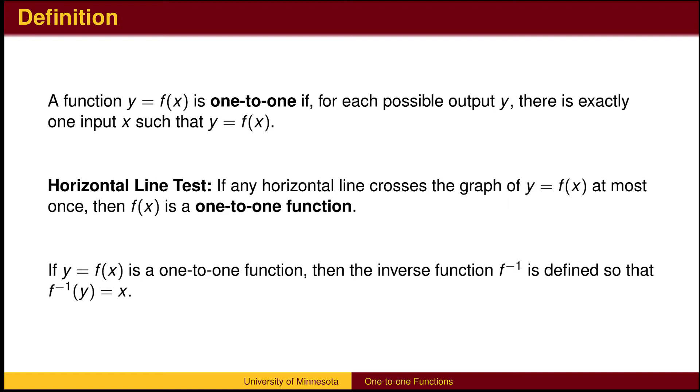The test to see if a function is one-to-one is called the horizontal line test. If a vertical line crosses the graph more than once, the graph is not a function, since a single x input is associated with more than one output. If a horizontal line crosses the graph more than once, the graph is not one-to-one, since a single y output is associated with more than one input.